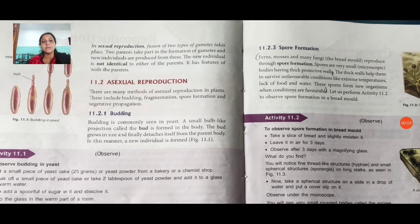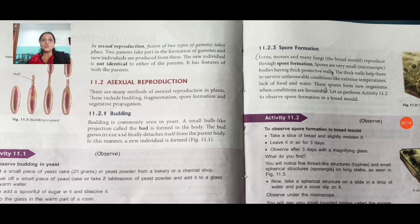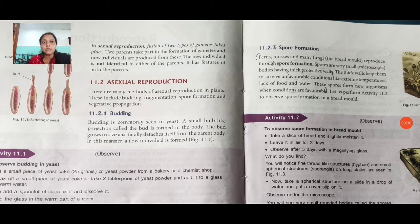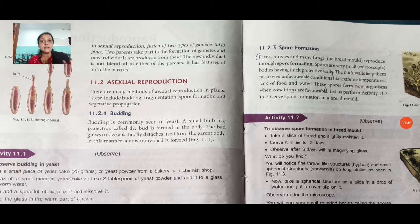In sexual reproduction, fusion of two types of gametes takes place. We need two parents because two types of gametes are involved. Two parents take part in the formation of gametes and new individuals are produced. The new individual is not identical to either parent — it has features of both parents. In sexual reproduction, features of the new plant come from both parents.